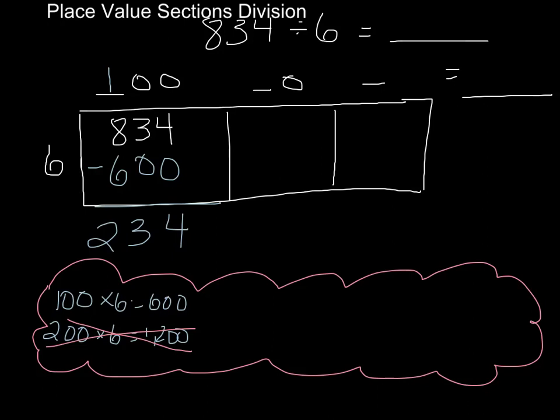I can't get any more hundreds of groups of six out of that, so now I'm going to try and say: how many tens of groups of six can I get out? I'm going to regroup that over into the tens section. I know 10 groups of six is 60, 20 groups of six is 120, 30 groups of six would be 180, and 40 groups of six would be 240 — that's too much.